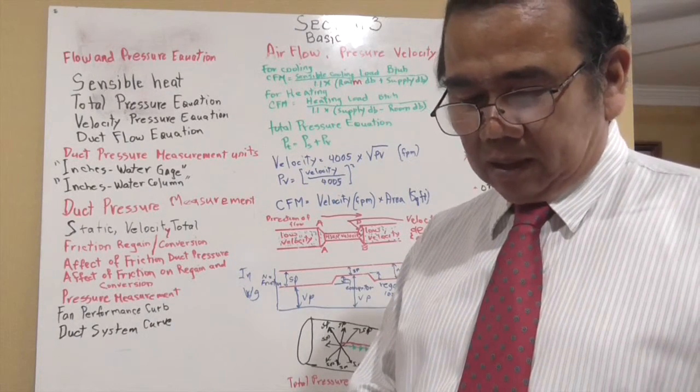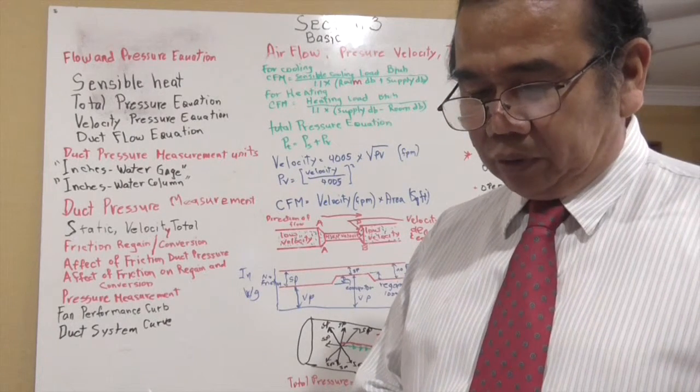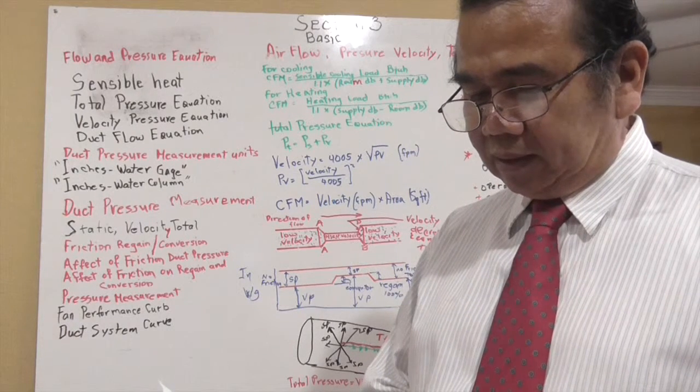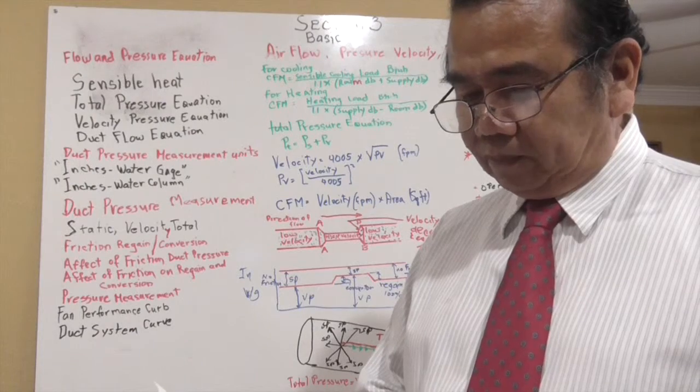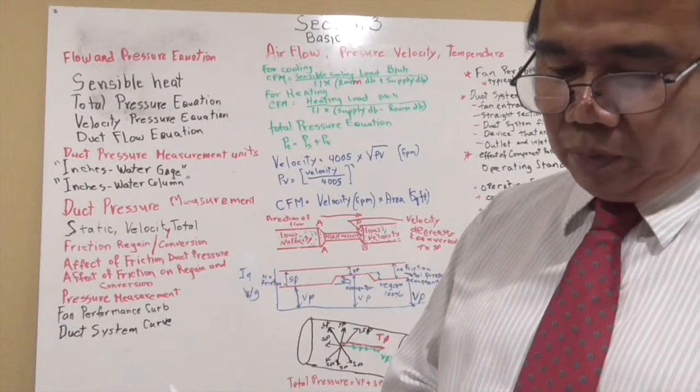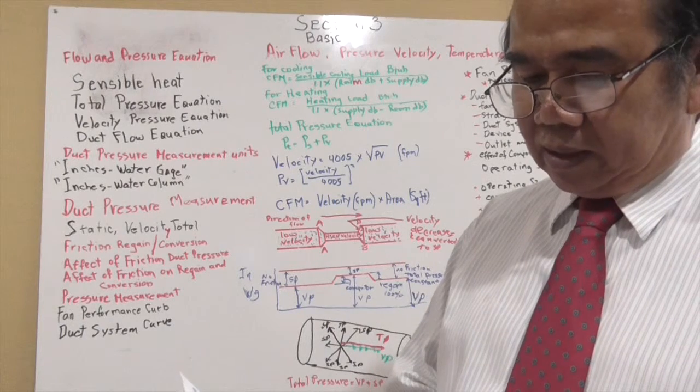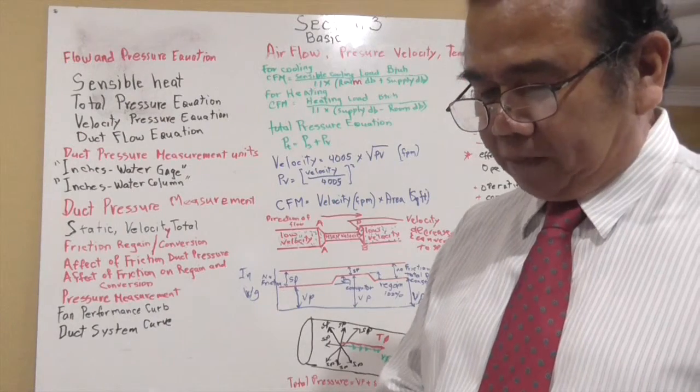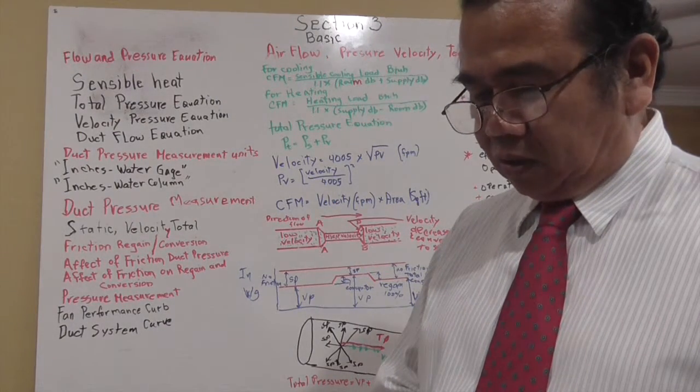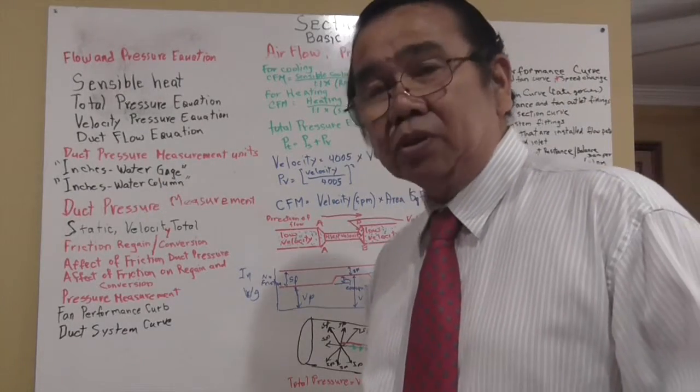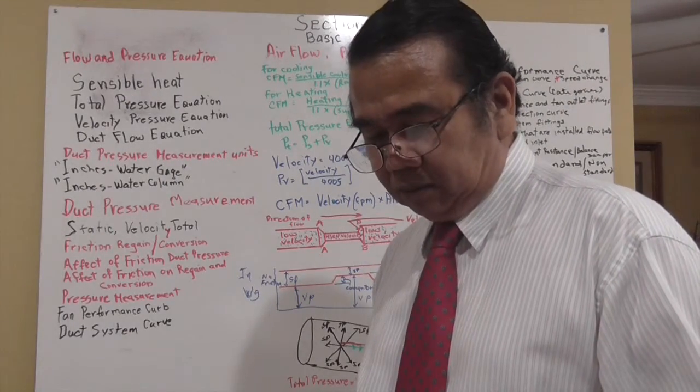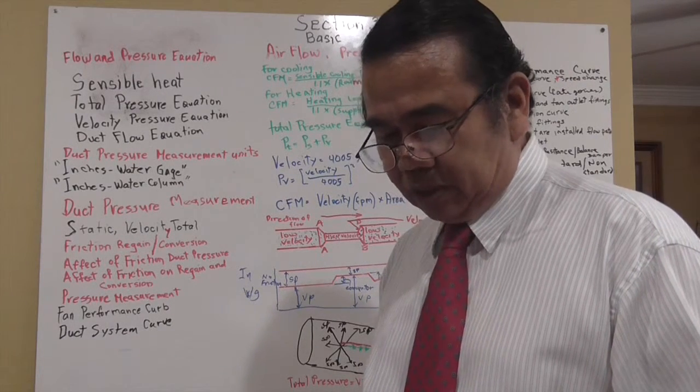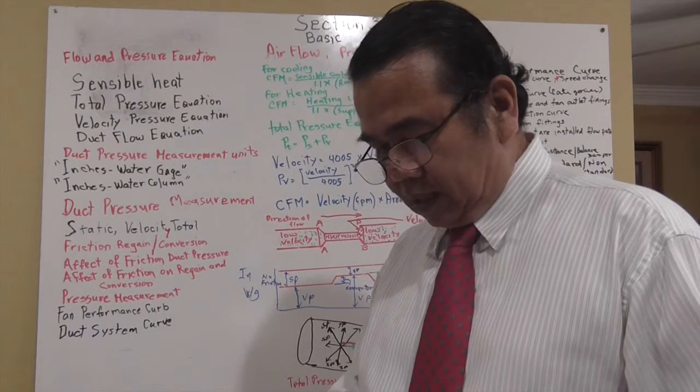For rectangular ducts, the equivalent diameter equals 1.3 times W times H to the 0.625 power, divided by W plus H to the 0.250 power. Where diameter equals round duct diameter, W equals rectangular width in inches, and H equals rectangular height in inches.